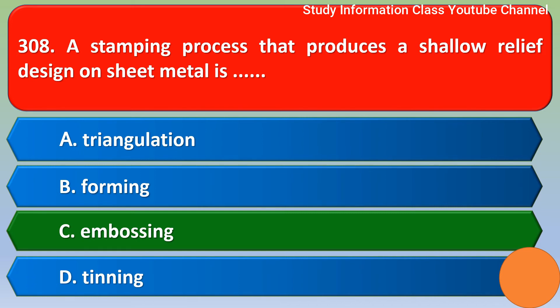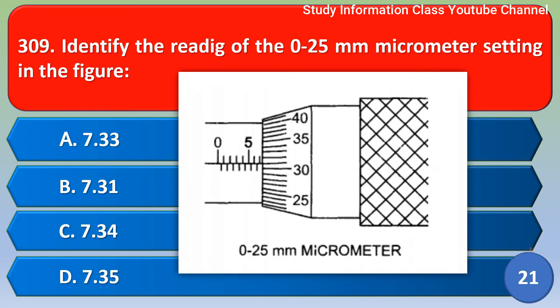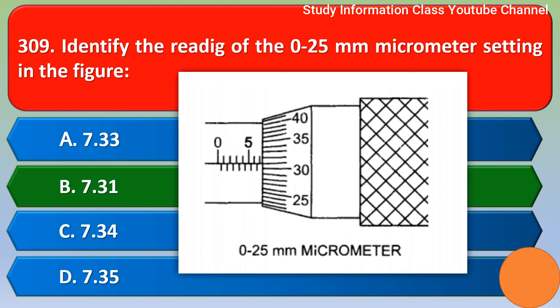Next question: identify the reading of the 0 to 25 millimeter micrometer setting in the figure. By seeing the picture, we can read the reading — Option B is the right answer, that is 7.31 millimeter.